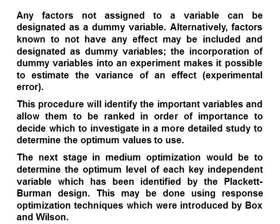Any factor not assigned to a variable is designated as a dummy variable. Alternatively, factors known to have no effect may be included and designated as dummy variables. The incorporation of dummy variables into an experiment makes it possible to estimate the variance of an effect, i.e., experimental error. This procedure will identify the important variables and allow them to be ranked in order of importance, to decide which to investigate in a more detailed study to determine the optimum values. The next stage in medium optimization is to determine the optimum level of each key independent variable identified by the Plackett-Burman design, using response optimization techniques introduced by Box and Wilson.